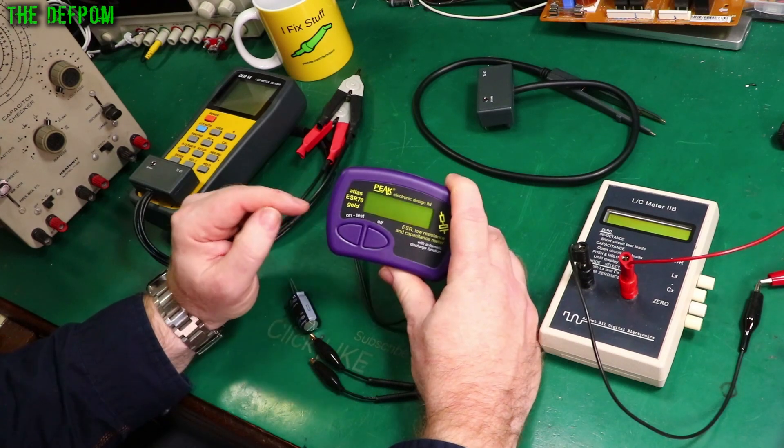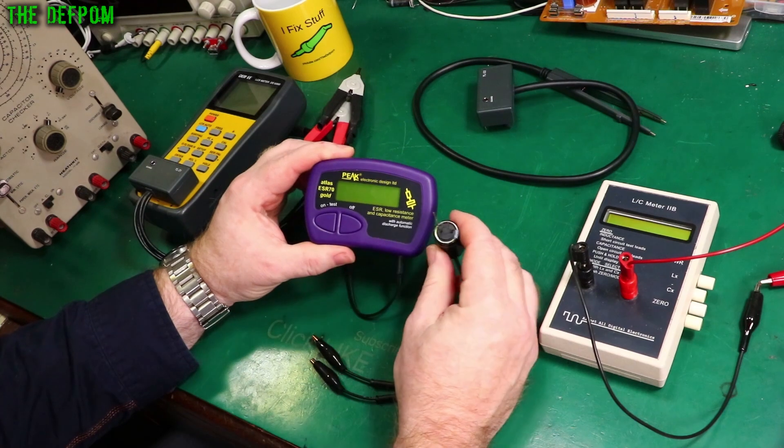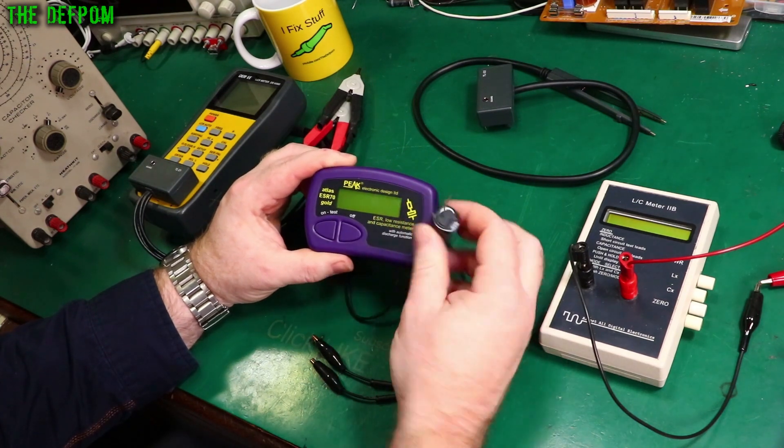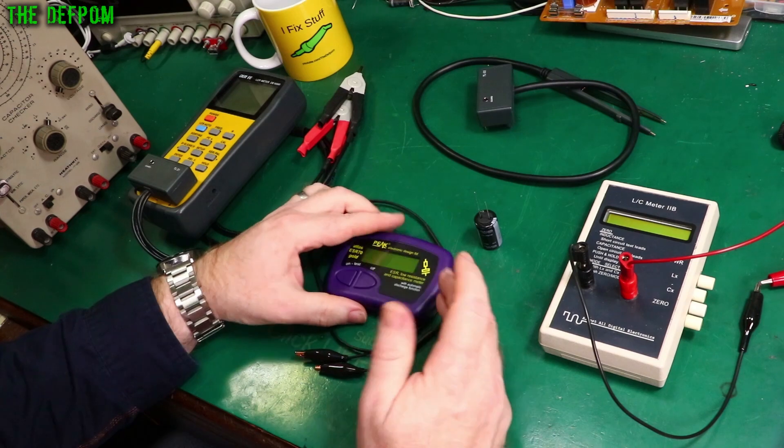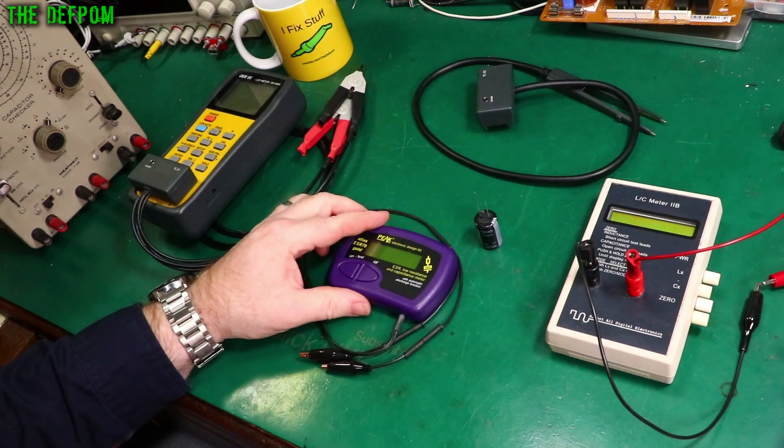And here I've got a PEAK ESR meter. This isn't actually an LCR meter. PEAK do make an LCR meter, but this is meant for checking things like electrolytic capacitors and ESR. That's what this one's particularly based on, but this is what I use my meters mostly for is checking capacitors. So I thought this would be relevant to include it in here.